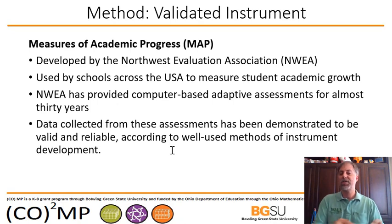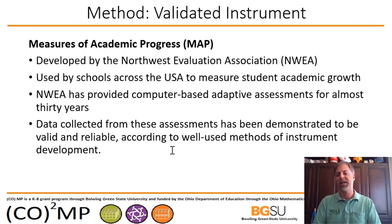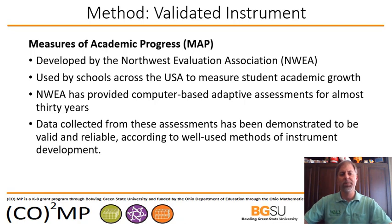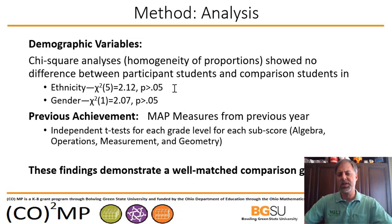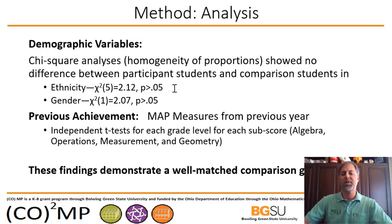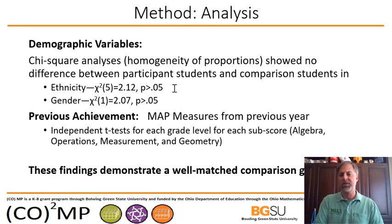We needed to measure student achievement, so we chose a validated instrument: the MAP assessment. It has hundreds of thousands of data points establishing reliability and validity, confirmed in multiple research studies. A chi-square analysis shows there are no significant differences between the participant group and comparison group — you want the groups of students to be statistically equivalent.